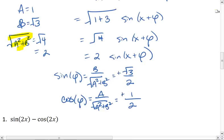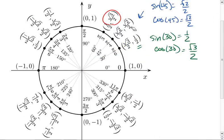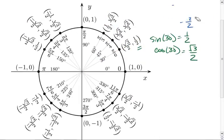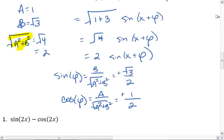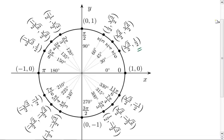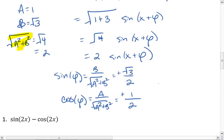And both of these are positive. So we want to go to our unit circle and find where that occurs. Where do we get for cosine a positive 1 half and for sine a positive root 3 over 2? And that occurs at 60 degrees. So we find out that phi is 60 degrees.